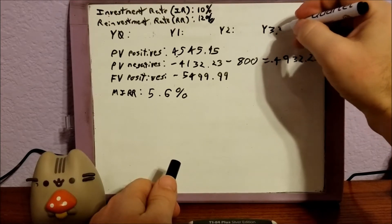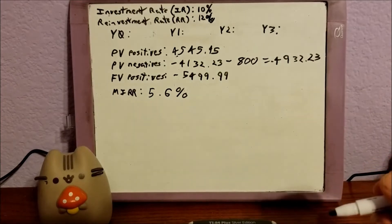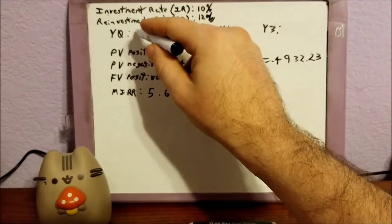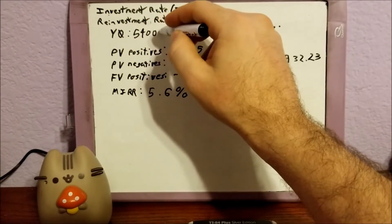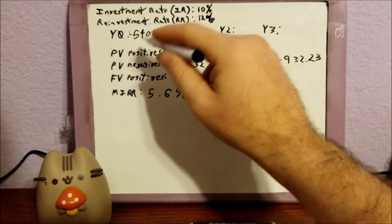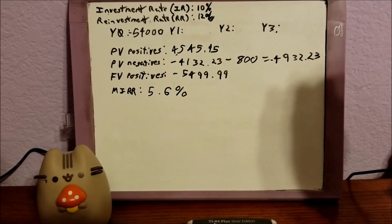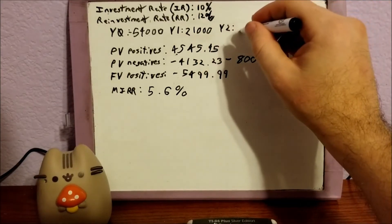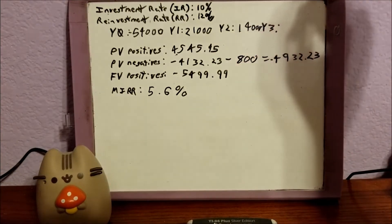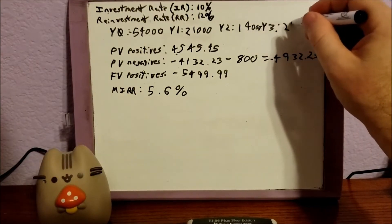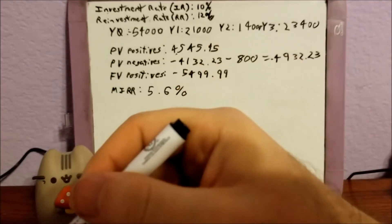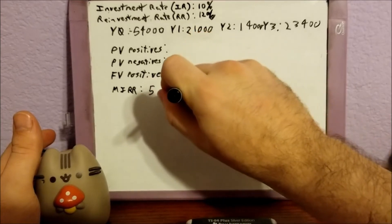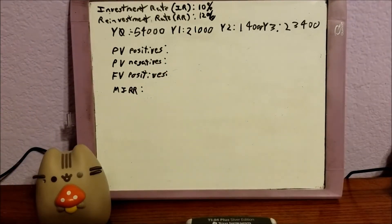This is actually the original problem I had, and I already know the answer. Year zero is going to be 54,000. Year one is 21,000. Year two is 14,000. And year three is 23,400. Let's erase our previous inputs because they're all going to change. So now they're all positive — how are we going to do this?